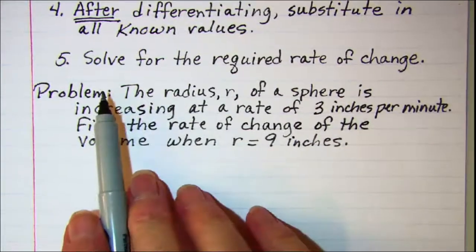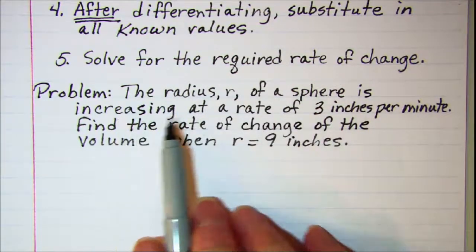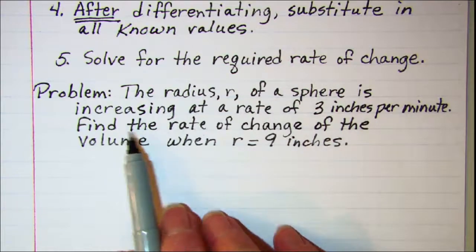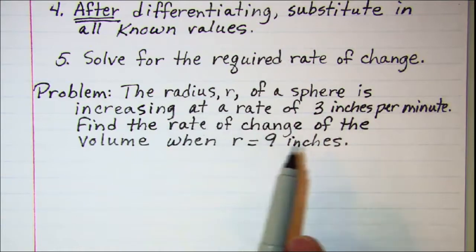The problem that we'll be working with is: the radius r of a sphere is increasing at a rate of 3 inches per minute. Find the rate of change of the volume when r equals 9 inches.